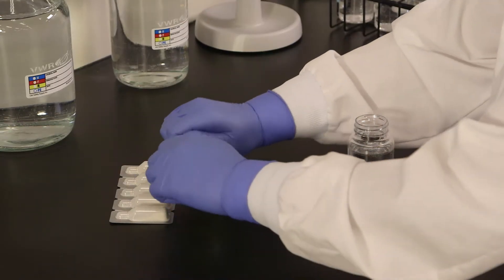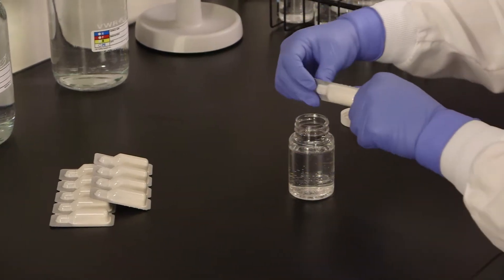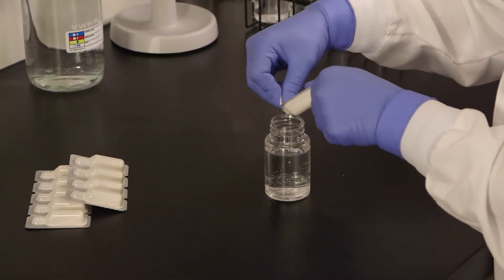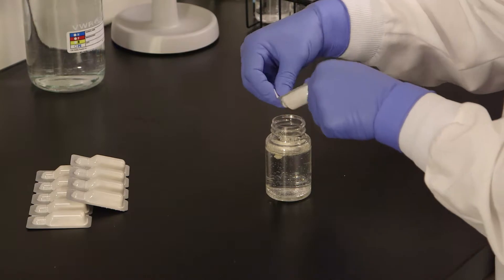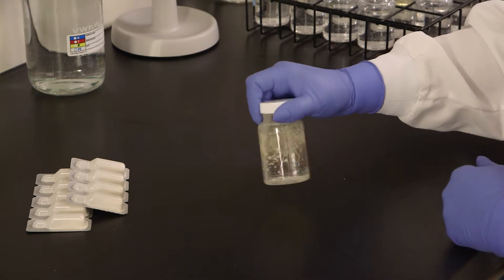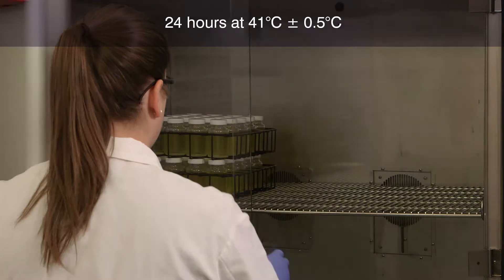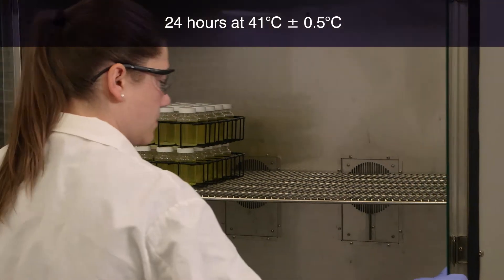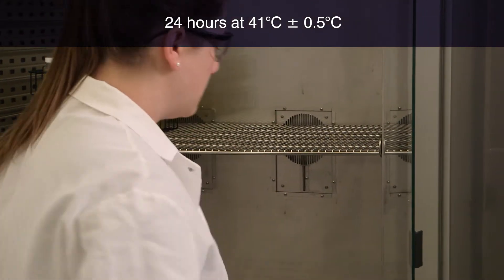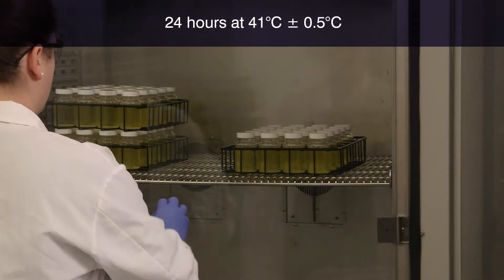Separate one reagent pack from its strip, taking care not to accidentally open the other packs. Snap open the reagent pack and pour the powder into a 100 ml water sample. Cap the vessel and shake to dissolve the Entralert powder. Some particles may remain undissolved. Incubate for 24 hours at 41 degrees centigrade, plus or minus 0.5 degrees centigrade, or according to your local regulations.